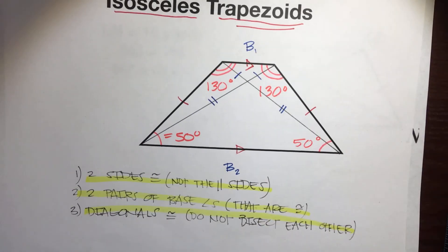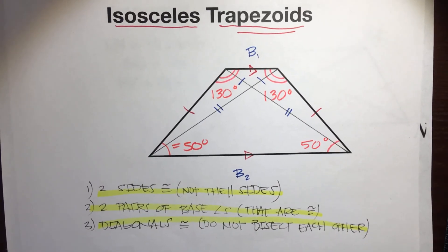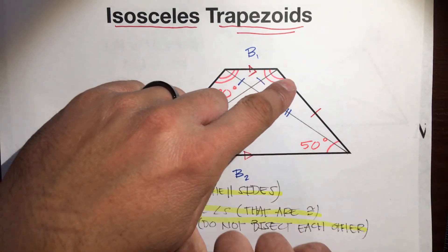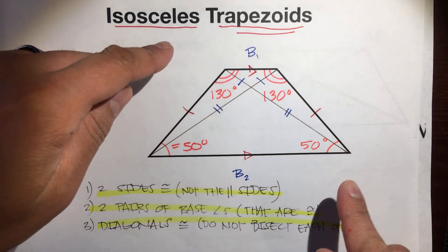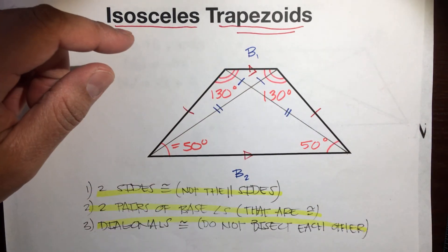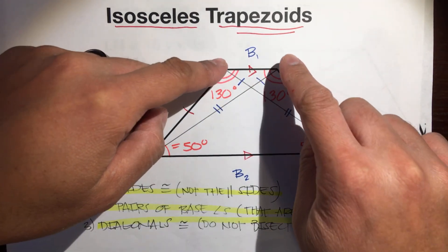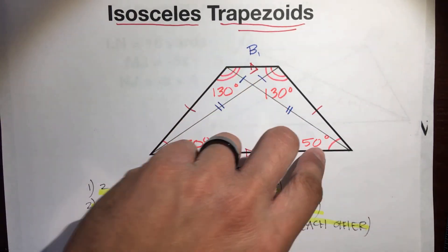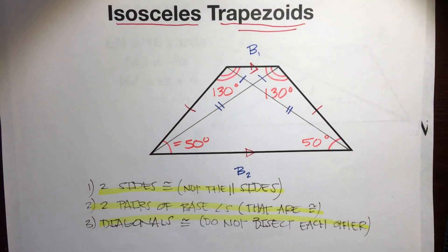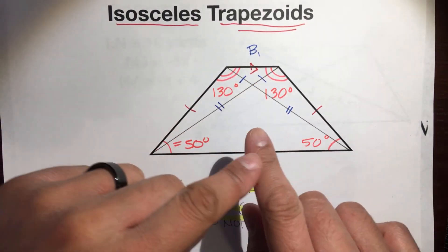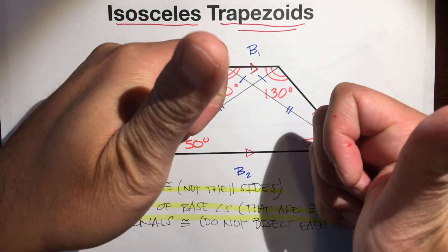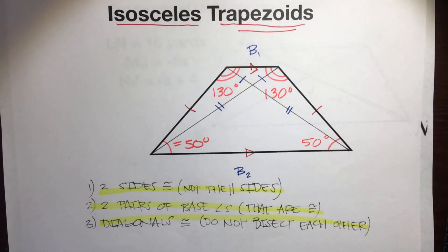That's all for isosceles trapezoids — three facts. Remember: not only does it have a pair of parallel lines like a regular trapezoid, but it also has a pair of congruent sides, two pairs of base angles that are congruent, and the diagonals are congruent but they don't bisect each other. Have a great day. Goodbye.